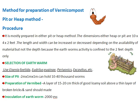Selection of earthworm: breeds like Eisenia foetida, Udryllus eugenia, Previnoxis exevitus etc. can be selected. A pit size of 2 m by 1 m by 1 m can hold about 10,000 to 40,000 worms. Preparation of vermi bed: a layer of 15 to 20 cm thick of woody loamy soil above a thin layer of broken bricks and sand should be made.